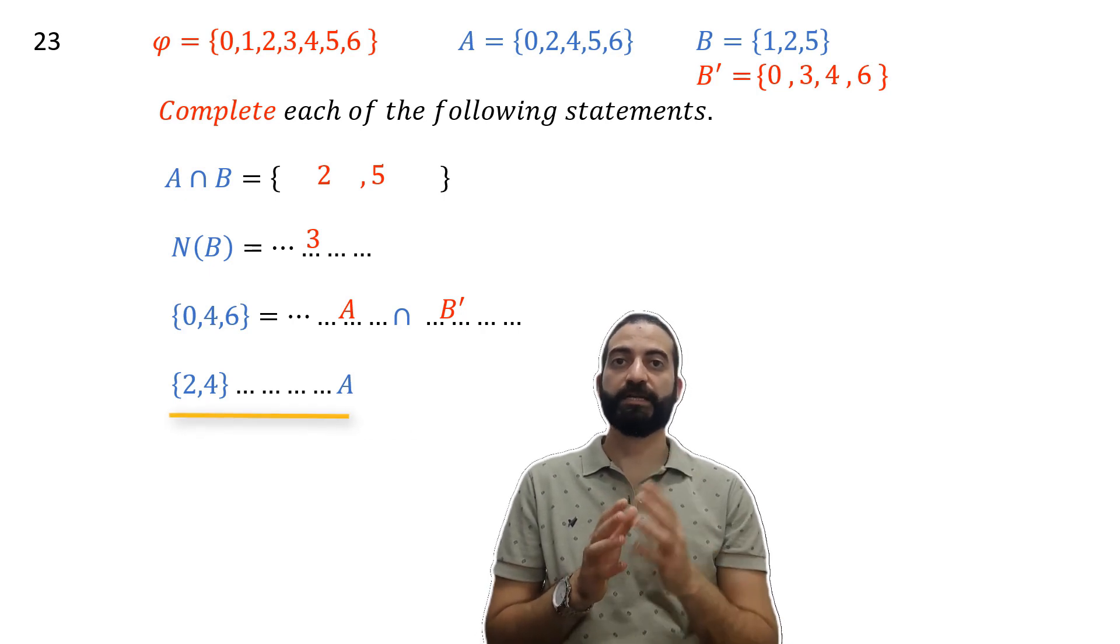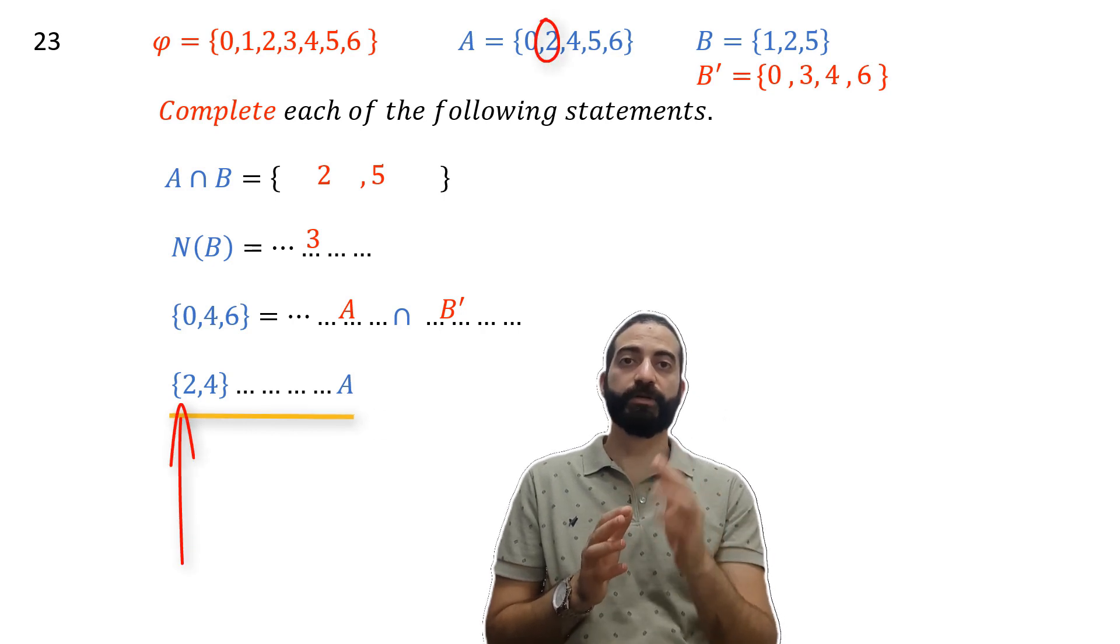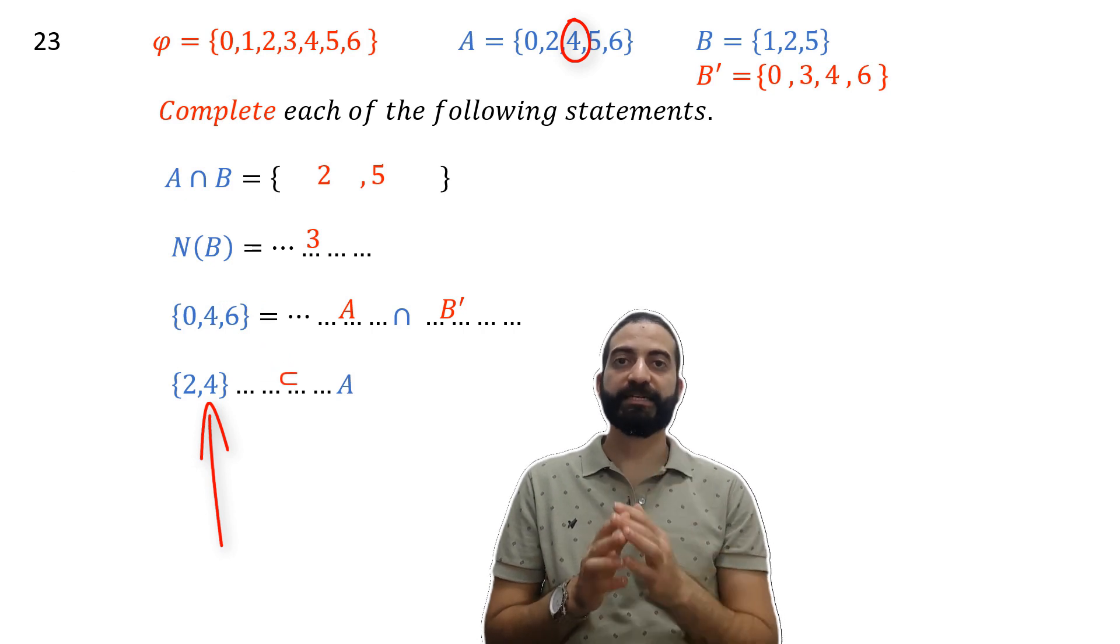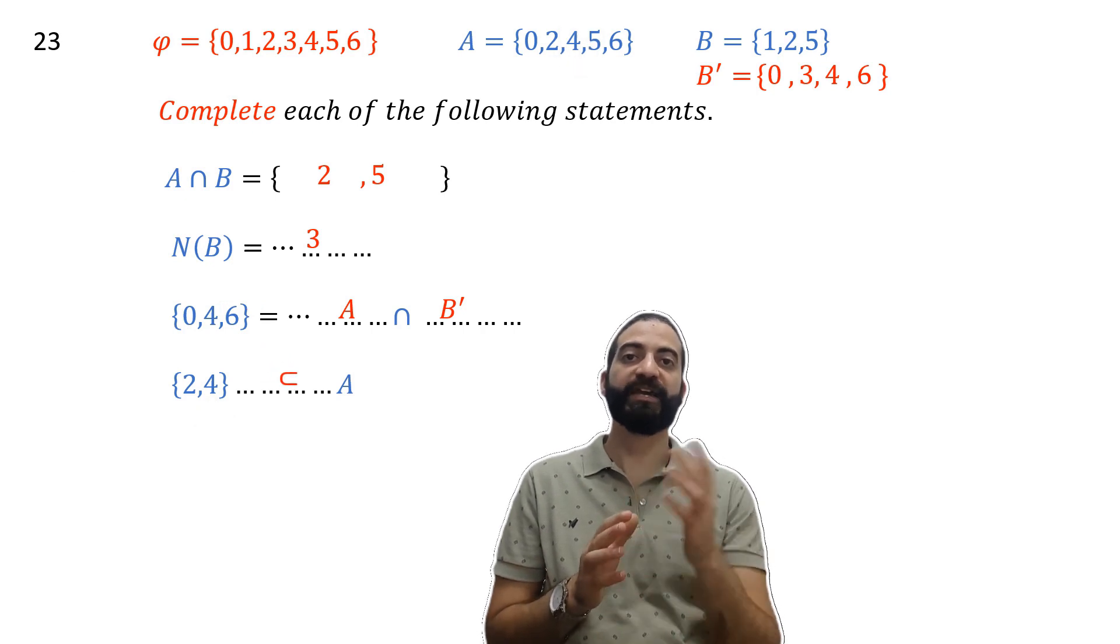We now come here. As we notice that 2 is an element of A and also 4 is an element of A, this means that {2, 4} is a subset of A.